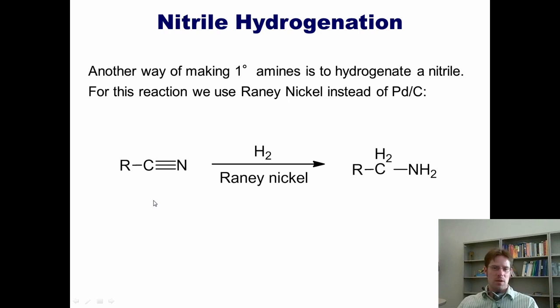Another way of making primary amines is to hydrogenate a nitrile. In order to hydrogenate a nitrile down to a primary amine, I don't use palladium carbon as I would an azide. Instead, I use hydrogen gas and Raney nickel.